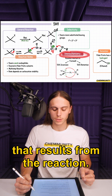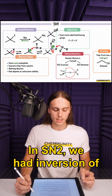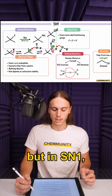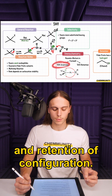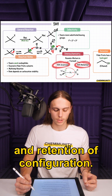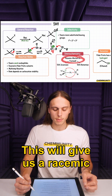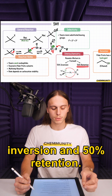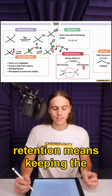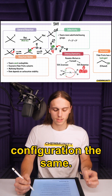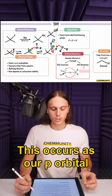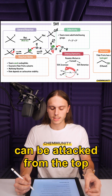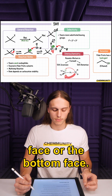Another thing to note is the stereochemistry that results from the reaction. In SN2, we had inversion of our configuration, but in SN1, we had both inversion and retention of configuration. This will give us a racemic mixture, meaning we had 50% inversion and 50% retention. Remember, retention means keeping the configuration the same. This occurs as our p-orbital from the carbocation can be attacked from the top face or the bottom face.